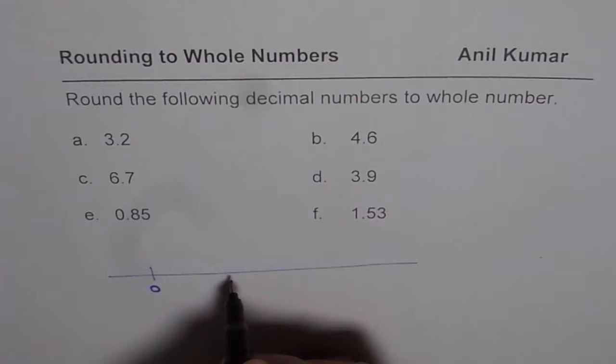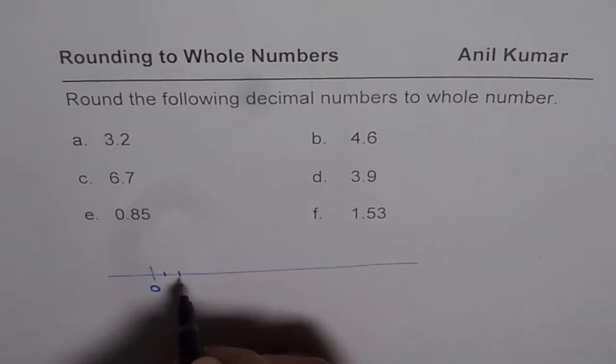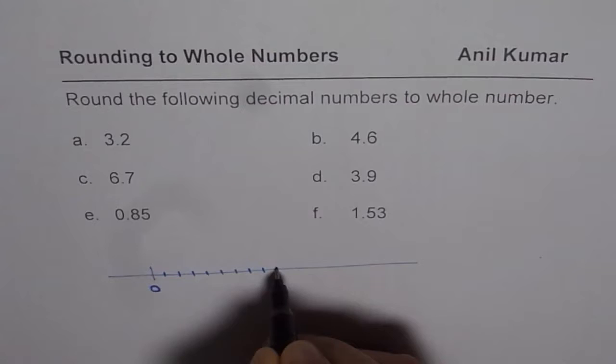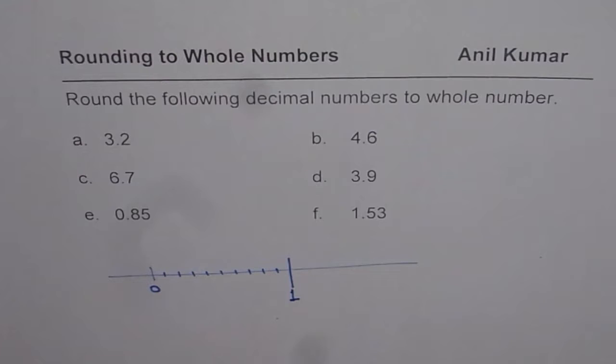We divide one particular unit into 10 small units. So this is, let us say, 10 small units: 1, 1-10, 2-10, 3, 4, 5, 6, 7, 8, 9, 10. So that becomes 1.